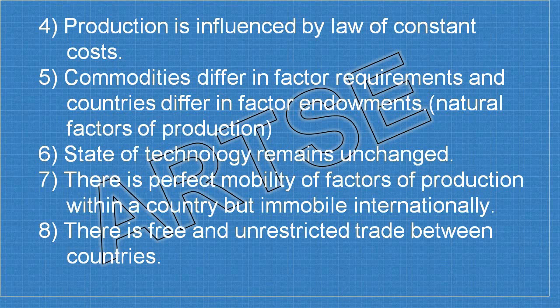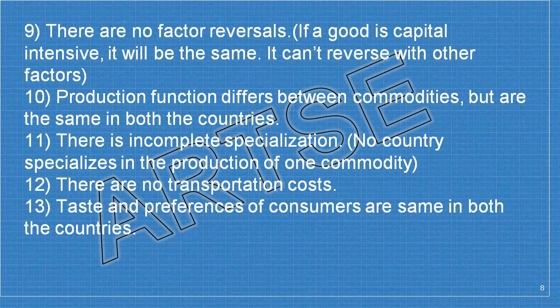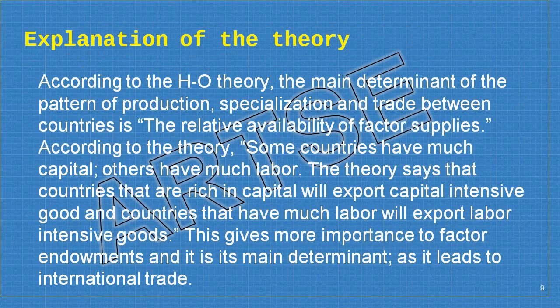Further assumptions include: seventh, perfect mobility of factors of production within a country but immobility internationally; eighth, free and unrestricted trade between countries; ninth, no factor reversals — if a good is capital intensive, it remains so; tenth, production functions differ between commodities but are the same in both countries; eleventh, incomplete specialization — no country specializes entirely in one commodity; twelfth, no transportation costs; and thirteenth, tastes and preferences of consumers are the same in both countries.